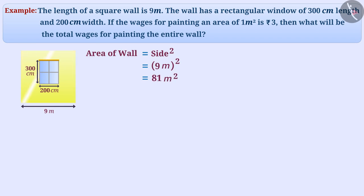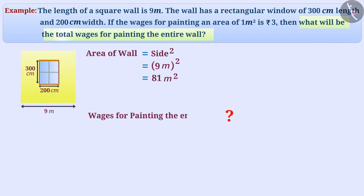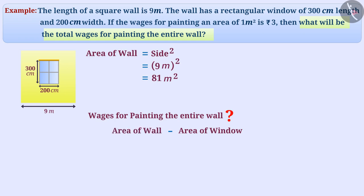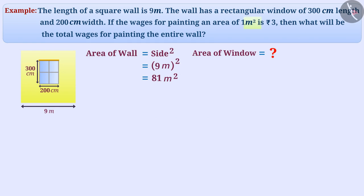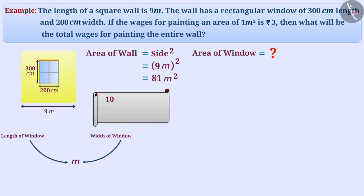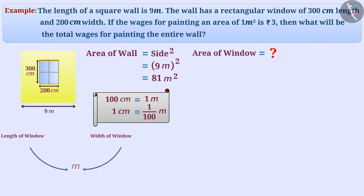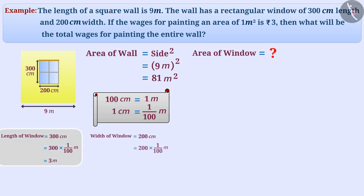But this entire area will not be painted. The area of the window will not be painted. To find the total wages for painting the entire wall, we have to subtract the area of the window from the area of the wall. Since we want the result in square meters, we will convert the length and width of the window into meters. Since 100 cm equals 1 meter, the length of the window 300 cm equals 3 meters, and the width 200 cm equals 2 meters.